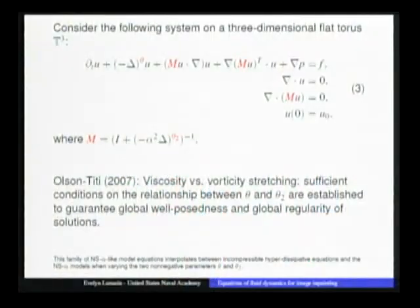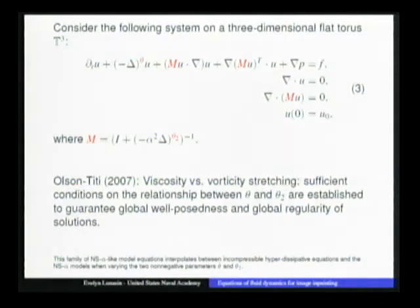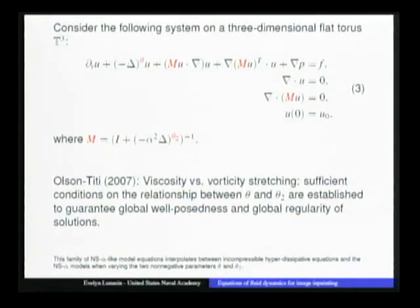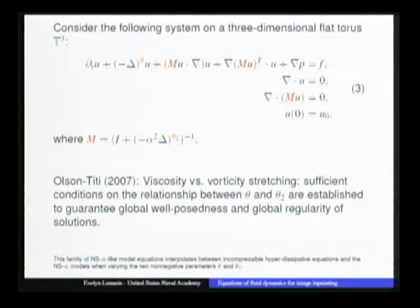If we consider a particular type of equations and vary the value of theta and theta_2, this is studied by Olson and Titi in 2007, where they derived sufficient conditions on the relationship between theta and theta_2 to establish global well-posedness and global regularity of solutions. This is like the Navier-Stokes alpha model, where they interpolate between having a hyperviscous model versus modifying the nonlinearity and smoothing the velocity field advecting the rough velocity field.